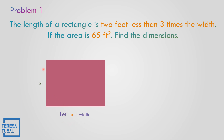Let x be equal to the width. This one is x, so that is the width. How about the length? This one is the length, that is 3x minus 2. How to get 3x minus 2? Based on the problem, it is 2 feet less than 3 times the width. It means 3 times the width, so 3x. x is represented as the width, so 3x less than — that is minus — so 3x minus 2.